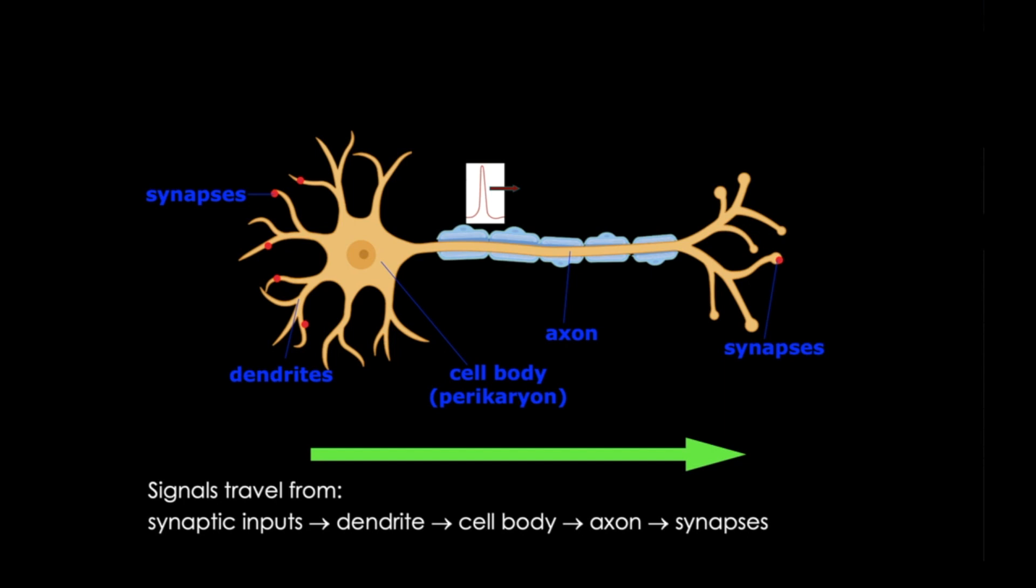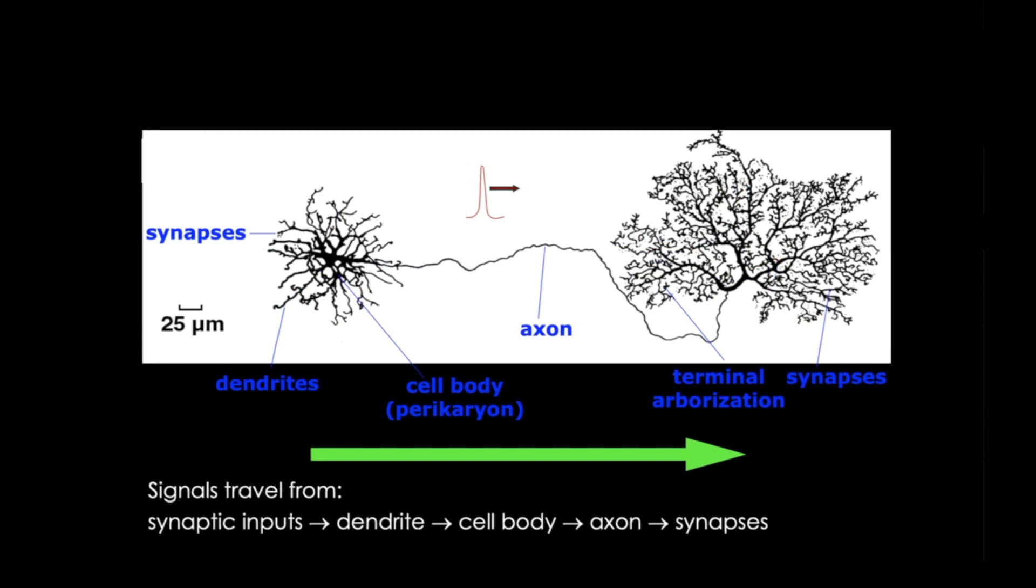And here you can see a trace of a Purkinje cell of the cerebellum. Its dendrites are much more elaborate than the basic image I showed you, but the components are essentially the same. And here, for comparison, I'm showing you the relative size of this neuron as compared to a typical white blood cell, the lymphocyte.